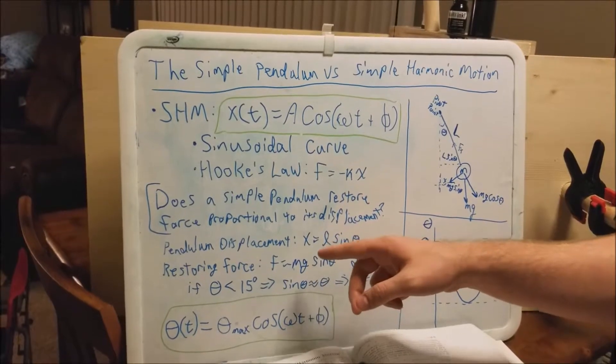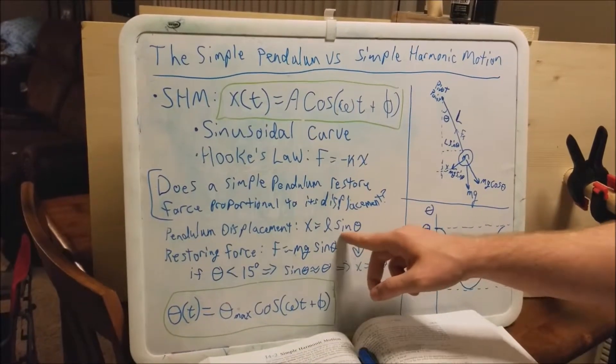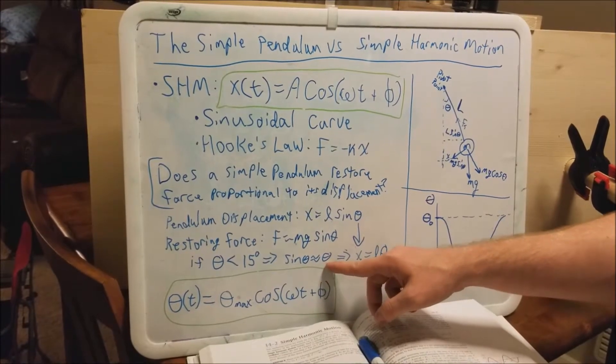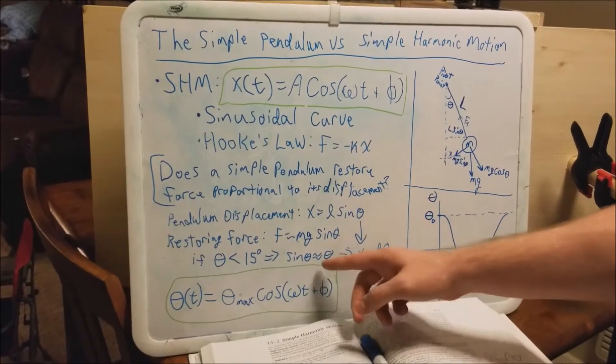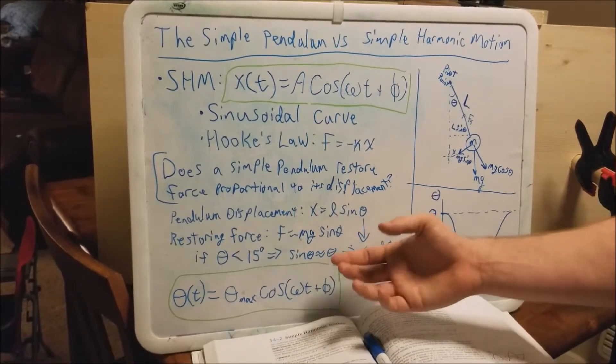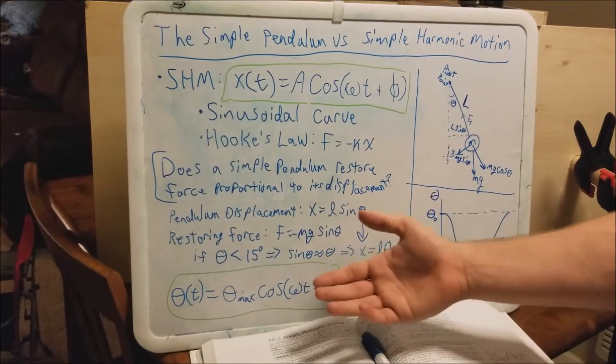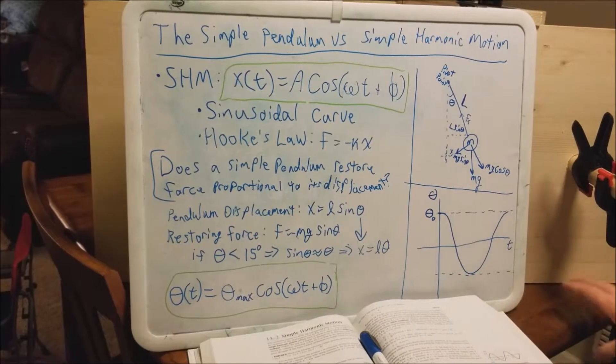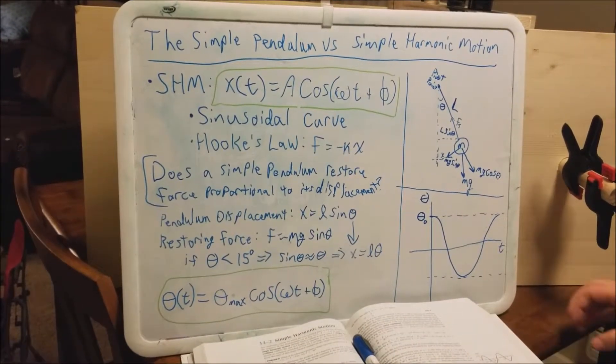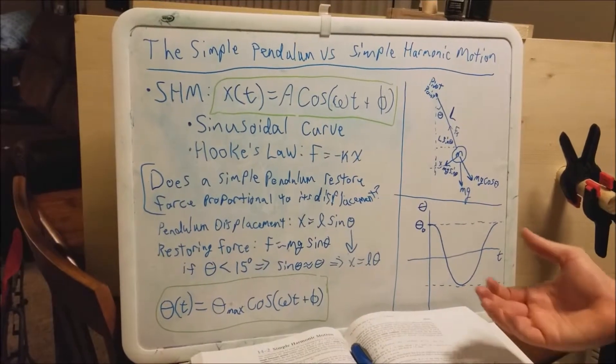We want the sine theta here to be approximately equal to theta. As theta approaches zero, sine theta approaches zero, so as it gets smaller and smaller the two become more and more equal.